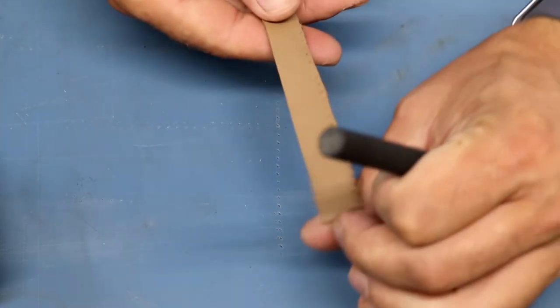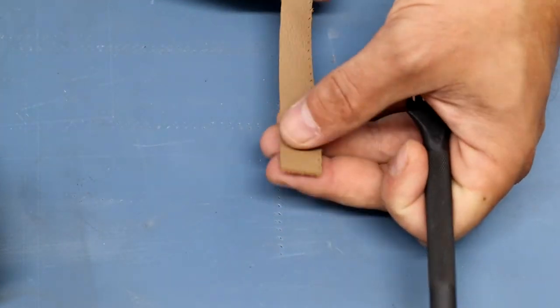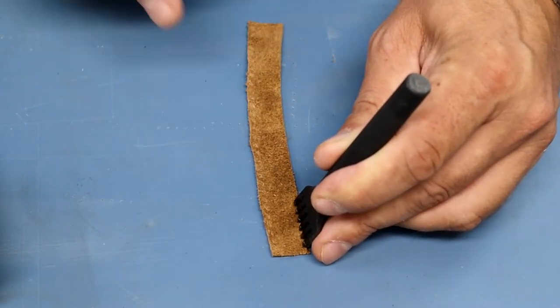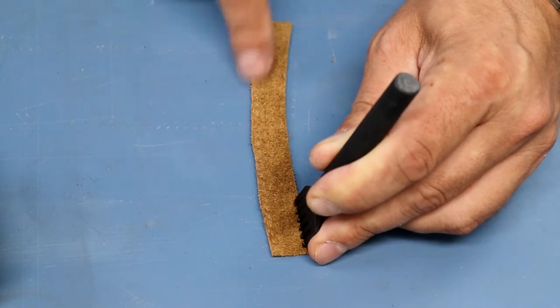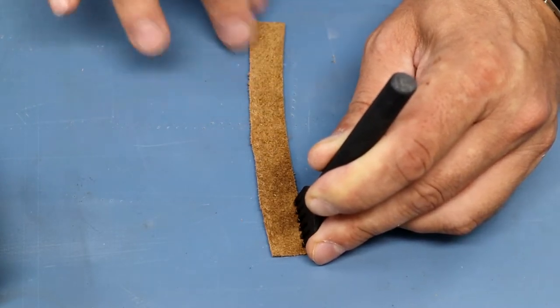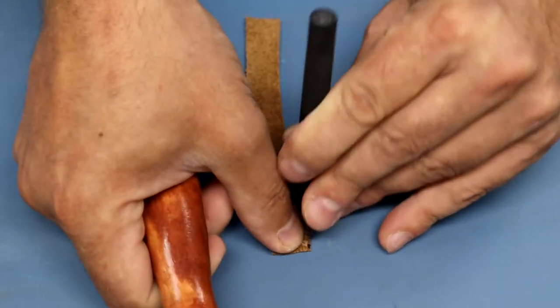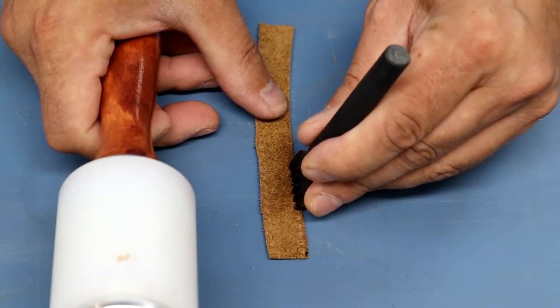So one side's punched. See them easier on the back side. And we're going to move on to the other. You'll notice with this thin chrome tan, it's bending as I go. That's because I'm spreading the material. Won't be a big deal once you get this all done.